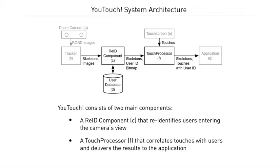U-touch consists of two main components: a ReID component that re-identifies users entering the camera's view, and a touch processor that correlates touches with users and delivers the results to the application.